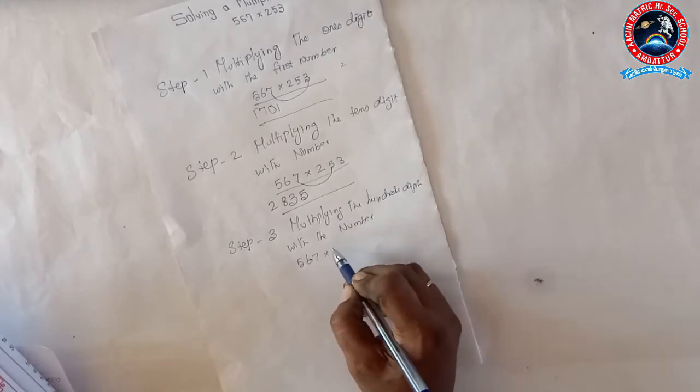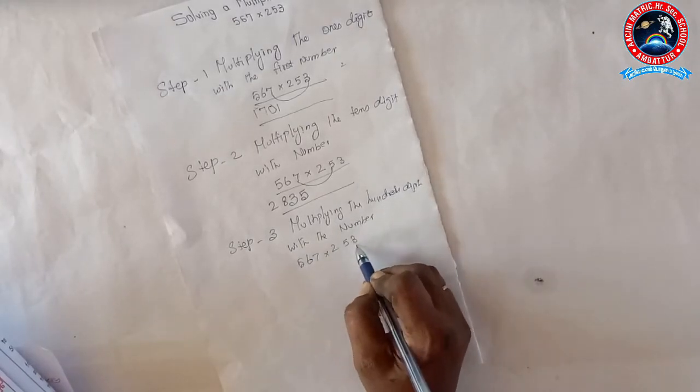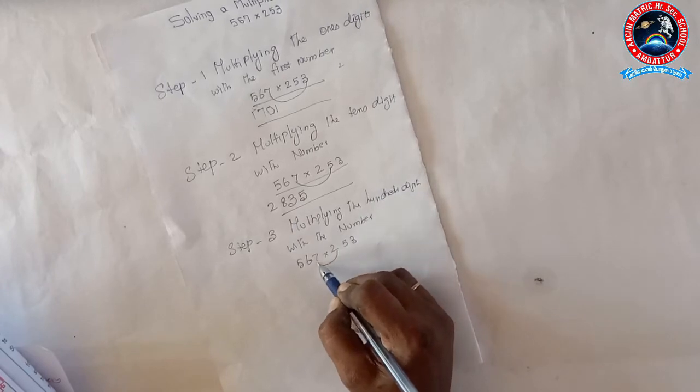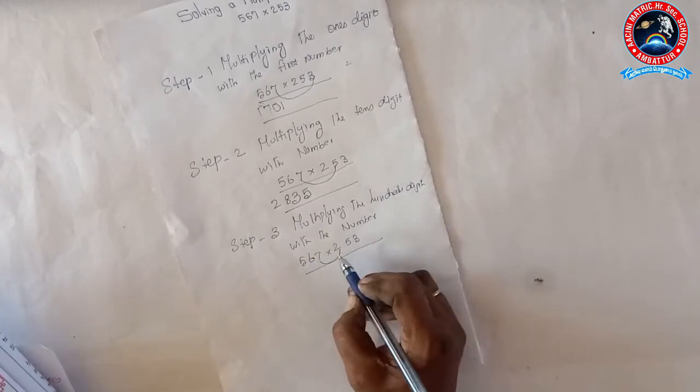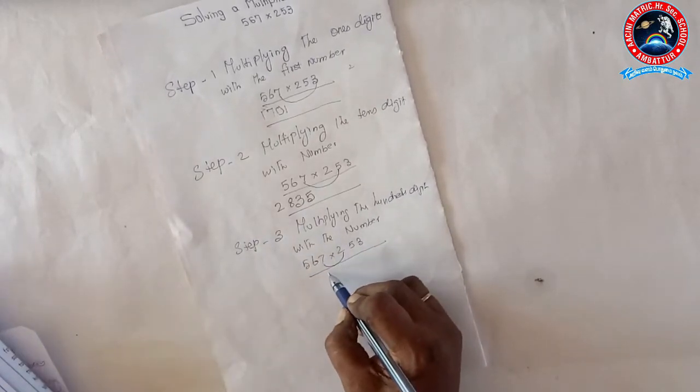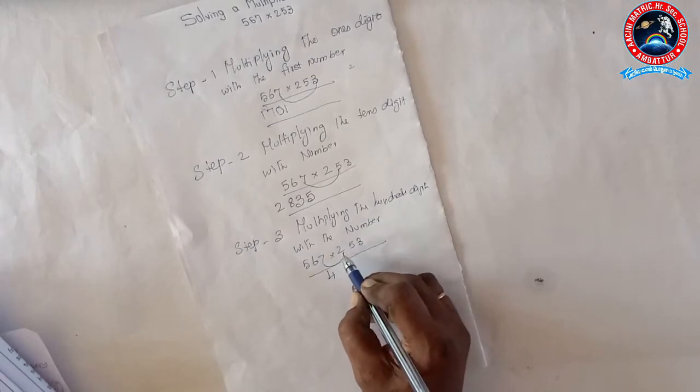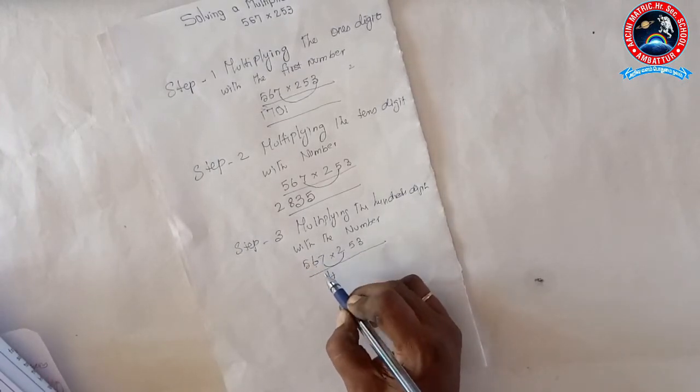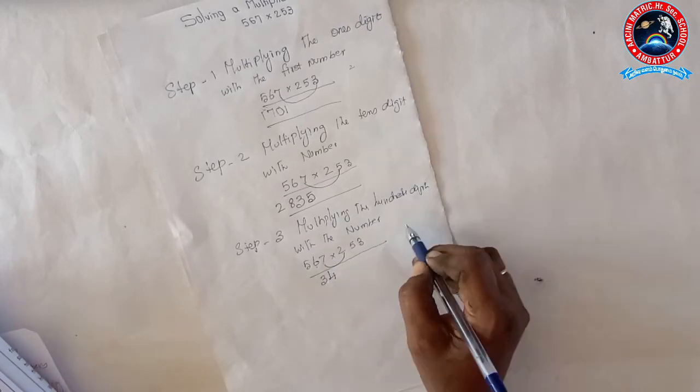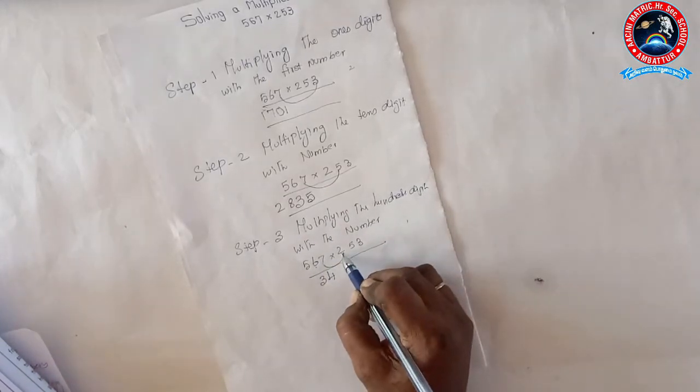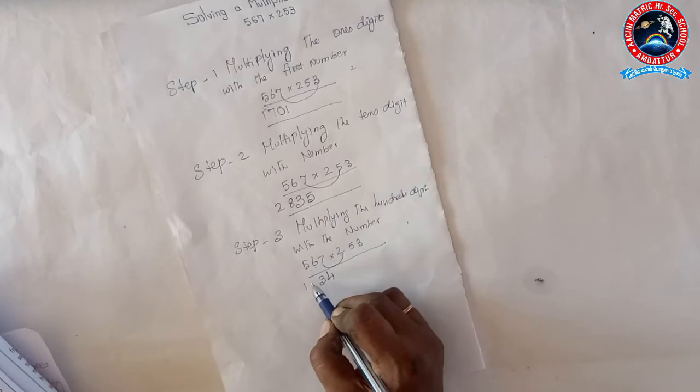567 into 253. 2 times 7 is 14. 2 times 6 is 12, 12 plus 1, 13, balance 1. 2 times 5 is 10, 10 plus 1, 11.